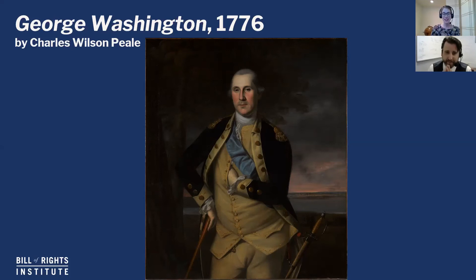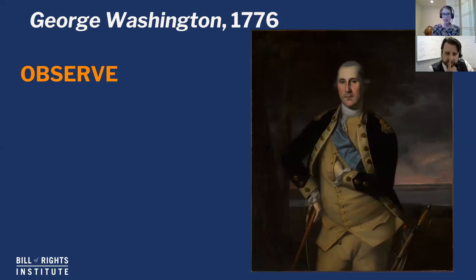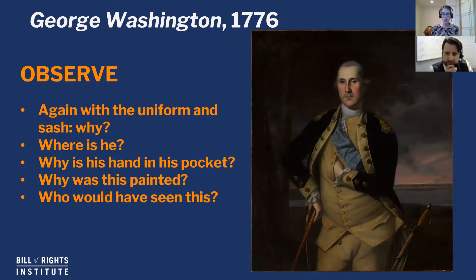His stance doesn't seem as relaxed. The arm on the cane — I don't know how you hold that for a while; that's extremely awkward. He also has his hand in his shirt, which I've seen in other portraits of men in power. So what's going on with the hand in the shirt? Where is he? Why was this painted? Is this the first portrait of George Washington? Why this particular pose, this particular time — and who would have seen this? These are all good questions to ask as a point of departure.